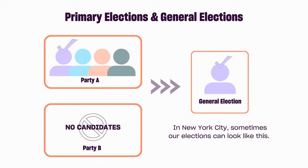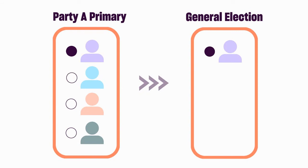In New York City, we sometimes have a primary election that looks like this, where there are no candidates running in other parties. This scenario happens when most candidates in the area are part of the same political party and members of other parties do not want to run for that office. If only one party has a primary race and there is no second party running in the general election, this means that the candidate who wins the primary election gets the job.